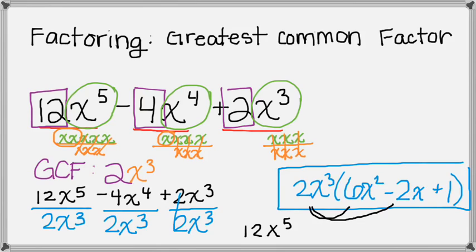2x cubed times negative 2x is negative 4x to the 4th. And then 2x cubed times 1 is 2x cubed. So you get right back to where you originally started.